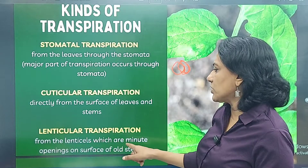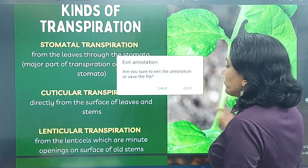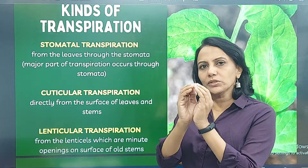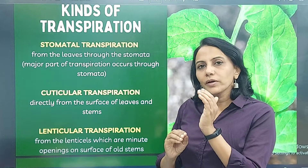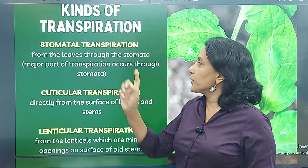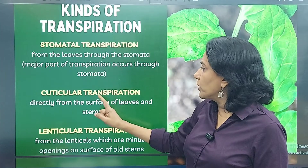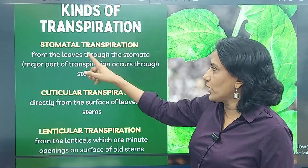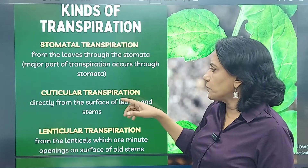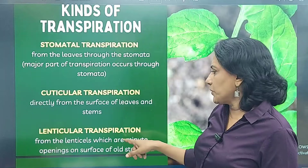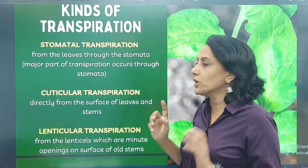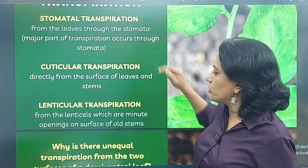Lenticular transpiration occurs from lenticels, which are minute openings on the surface of old stems. On every stem you will find small holes — not like stomata, just holes in the stem — and through those, evaporation of water vapor occurs. So you have stomatal transpiration through the leaf, cuticular transpiration from the surface of leaves and stems, and lenticular transpiration from the lenticels of old stems. Maximum transpiration happens through stomata.